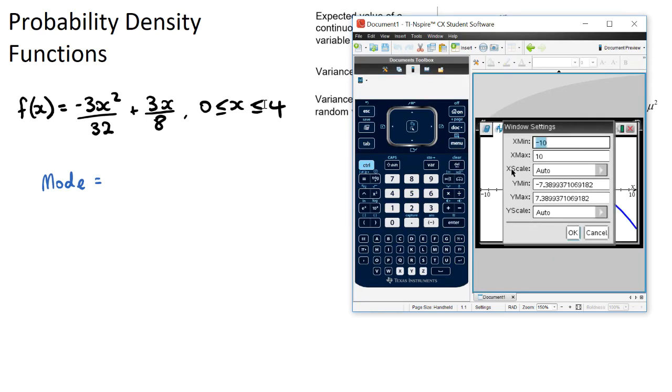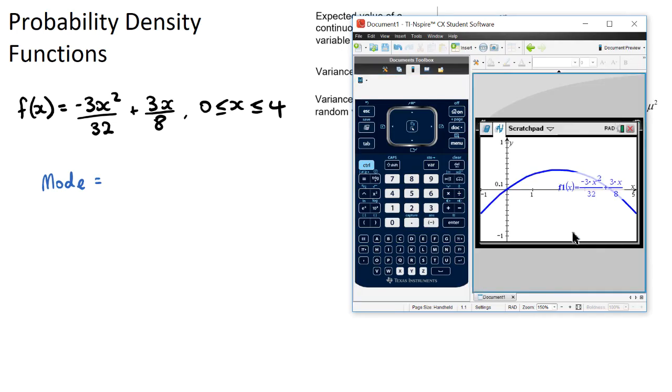We might need to change our zoom here, so let's go to our window and zoom. Now our domain is from 0 to 4, so I'm going to choose negative 1 to 5 just so I can see both ends, and my x scale is 1. My y max shouldn't get higher than 0.5, so I'm going to make it 1 and make this negative 1. Okay, so this is our probability density function here.